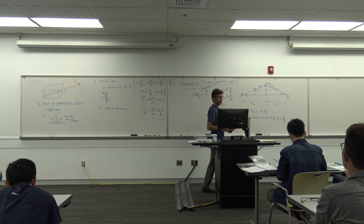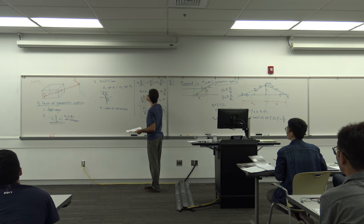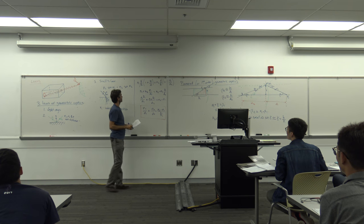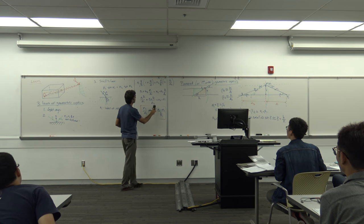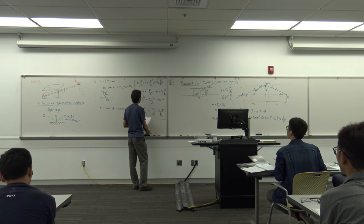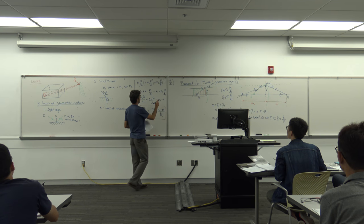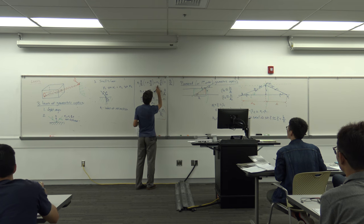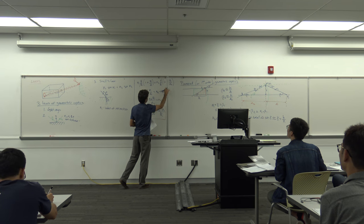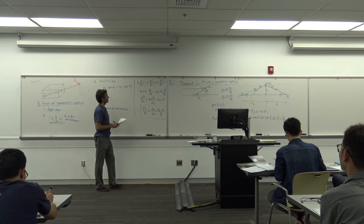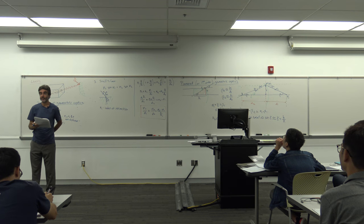A student notes a correction: the last term should be N2 divided by D2, not N1. After the correction, the equation reads: N1/D1 + N2/D2 = (N2 − N1)/R.